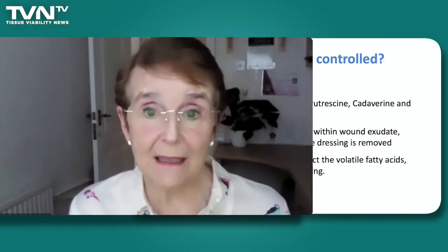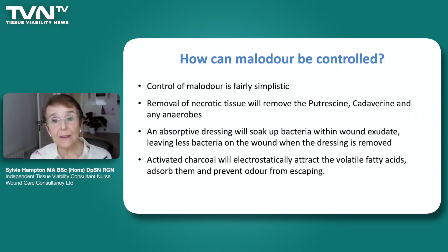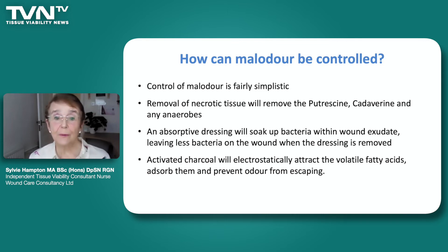You can see in that particular case how well her wound actually did — it's now granulating, doing really well, and there is no smell at all. But while it had the necrotic tissue there was a lot of smell. So control of malodour is fairly simplistic: removal of necrotic tissue will remove the putrescine, cadaverine, and any anaerobes.